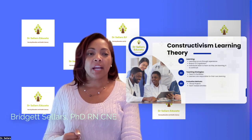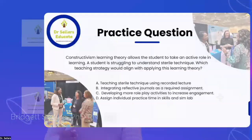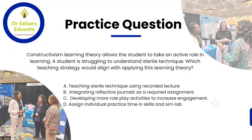Let's take a look at the practice question and see how you did. We have four choices. The question is tied to a student struggling to understand sterile technique. The options are: A — teaching sterile technique using recorded lecture; B — integrating reflective journals as a required assignment; C — developing more role play activities to increase engagement; and D — assigning individual practice time in the skills and sim lab.